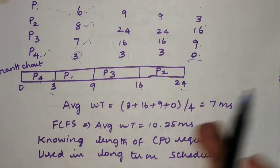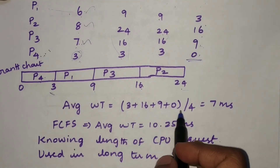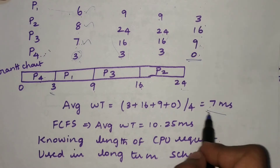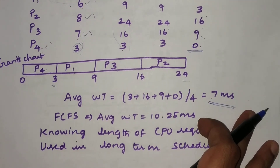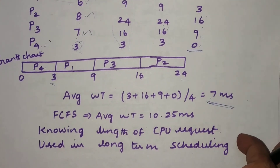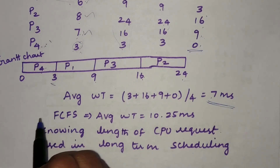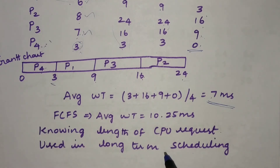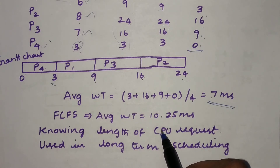If we calculate the average waiting time under Shortest Job First scheduling, we get seven milliseconds.